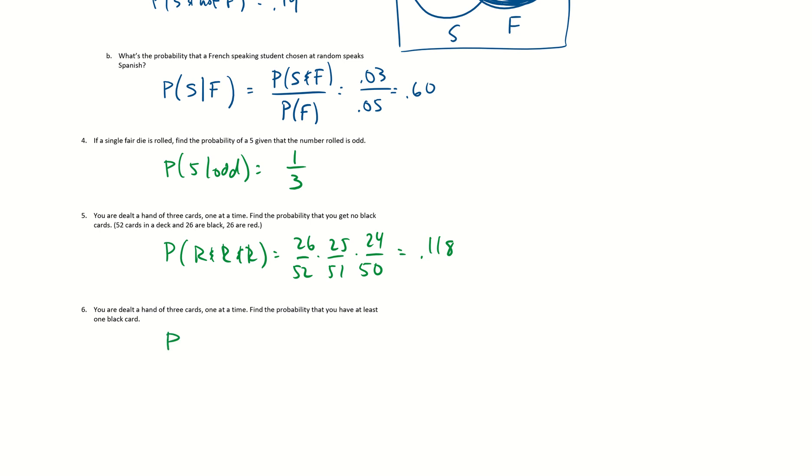If you're dealt 3, it's probably you have at least one black card. It's 1 minus the probability of the complement of at least one black, because one black could be one black or two or three. It's a lot of different possibilities. This would be no black or all red, which is what we just did right up here. So this is 1 minus 0.118, which is 0.882.